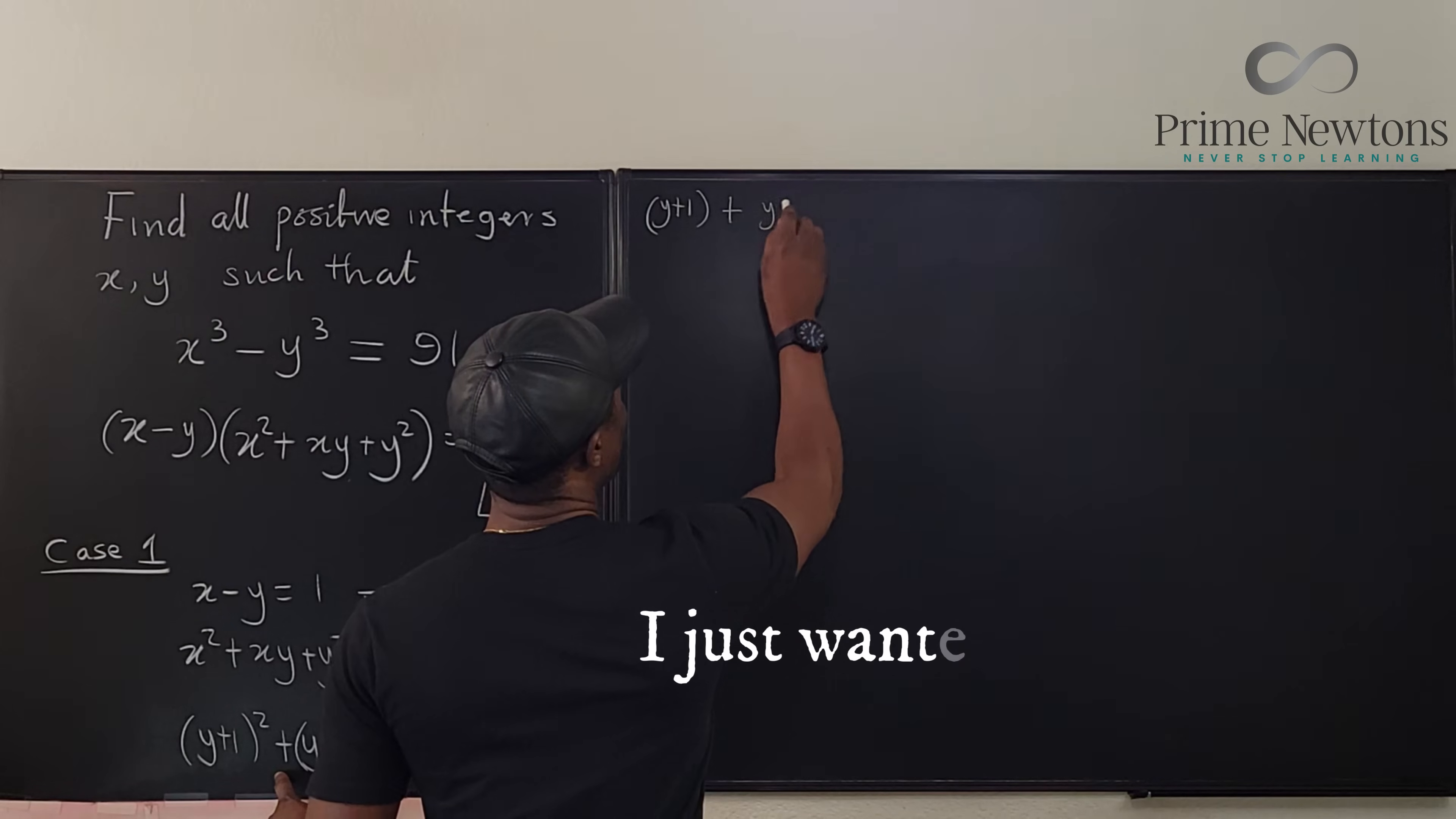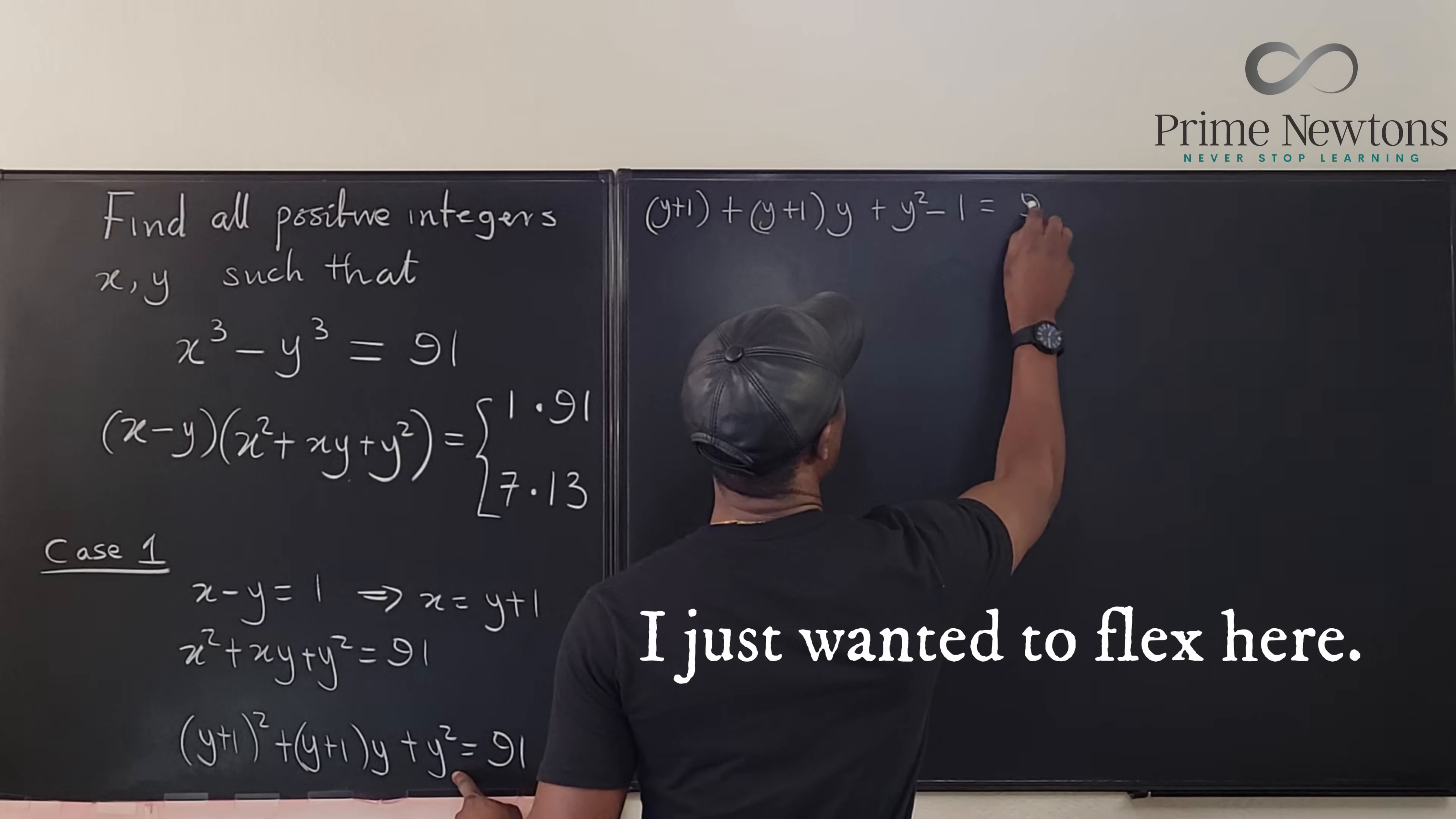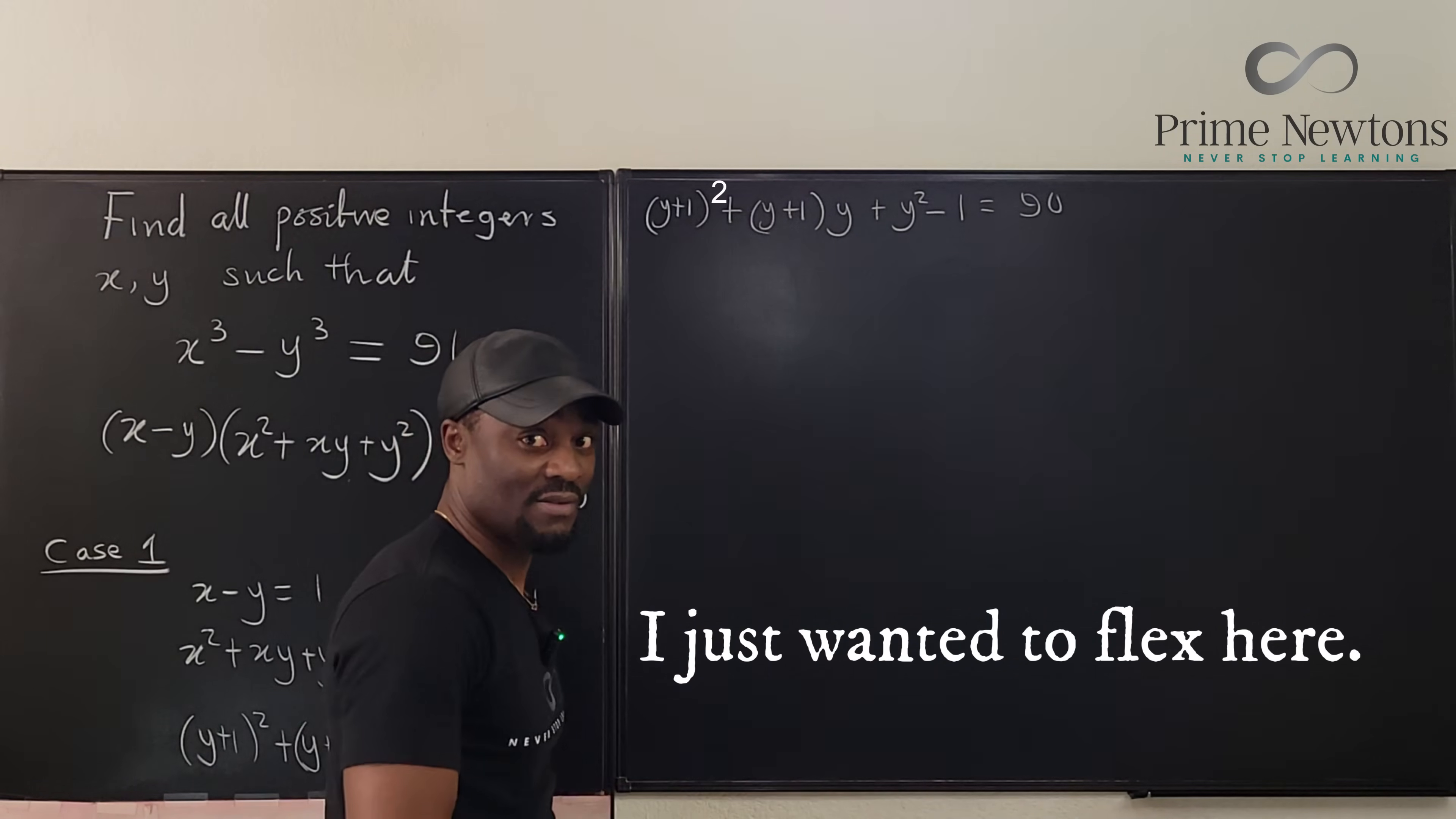This is going to be plus y plus 1 times y. And then here, instead of writing y squared, I'm going to say plus y squared minus 1 equals 90. So what I did was I subtracted 1 from both sides. But I know that y squared minus 1 is the difference of two squares: y minus 1, y plus 1.